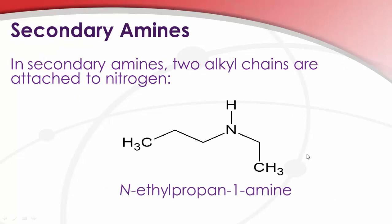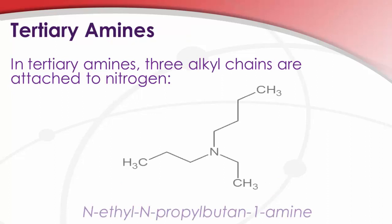With secondary amines, all we do is specify the attachment point for the second group. So this is one, two, three propane or propan-1-amine, but it has a second group on it. The ethyl group is also attached to the nitrogen. So we give the attachment point accordingly. In tertiary amines, all three of the protons have been replaced by alkyl chains. So, one, two, three, four, our longest carbon chain is butane. Our attachment point is the one point on that chain, so butan-1-amine. And then alphabetical order for the other two groups, an ethyl group here and a propyl group here.